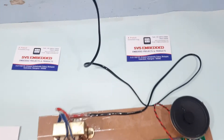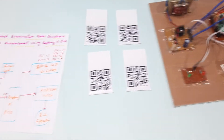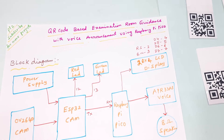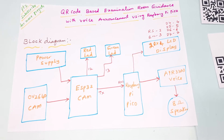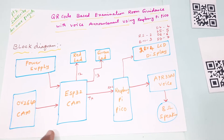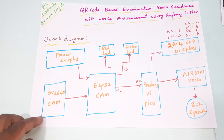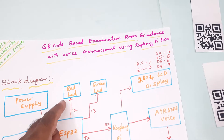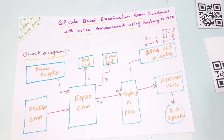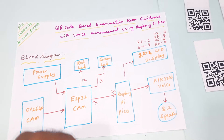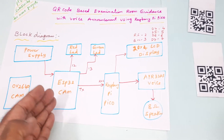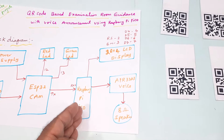Hi, we are from SVS Embedded. The project title is QR Code Based Examination Room Guide with Voice Announcement using Raspberry Pi Pico. Here we are using an ESP32 camera and OV2640 camera module. There is one red LED and one green LED for indicators, whether the card is scanned or not. Whatever data is read, it should be sent to the Raspberry Pi Pico module.